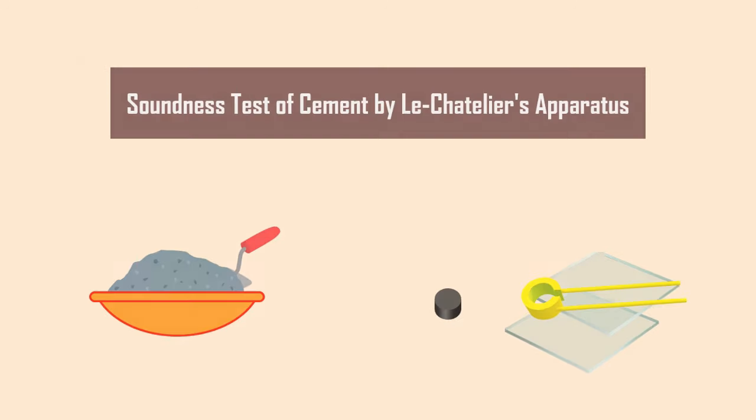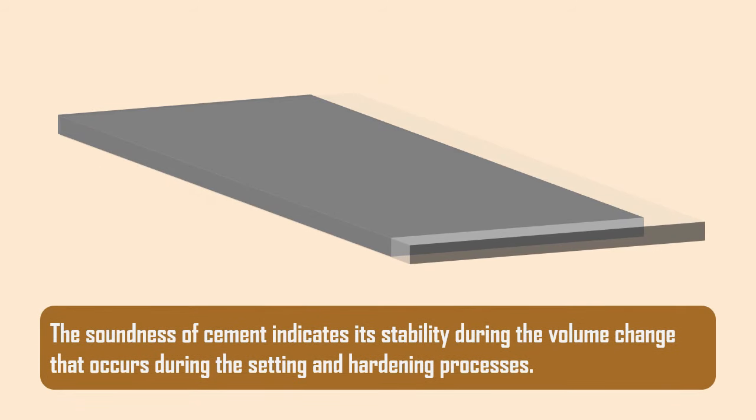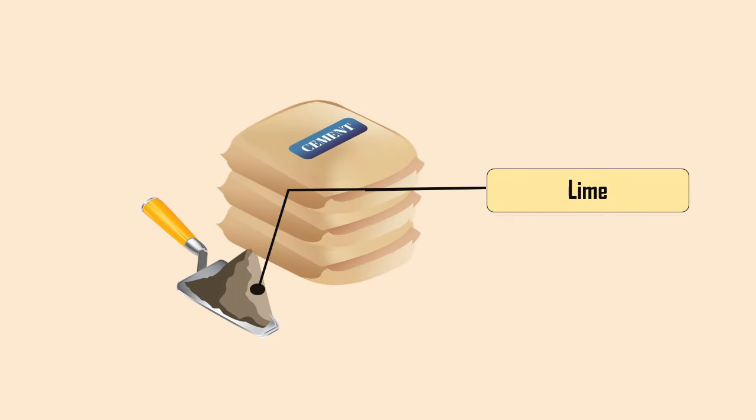Soundness Test on Cement. The soundness of cement indicates its stability during the volume change that occurs during the setting and hardening processes. Lime is a major component of cement, accounting for 60-70% of its weight.